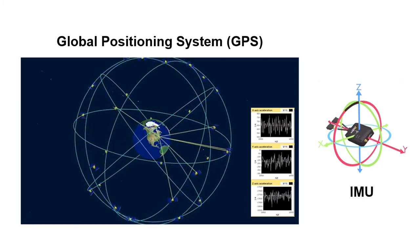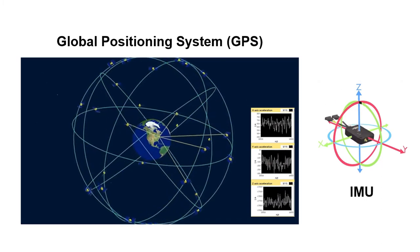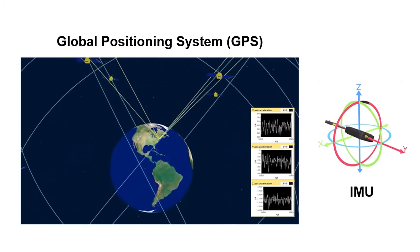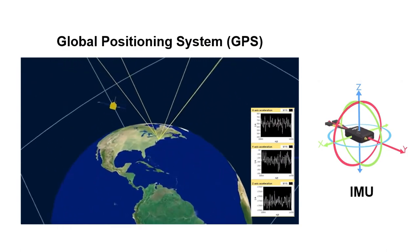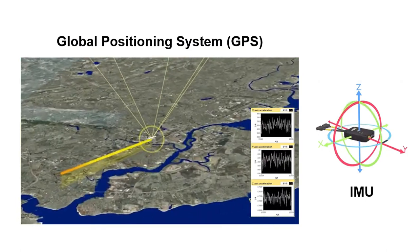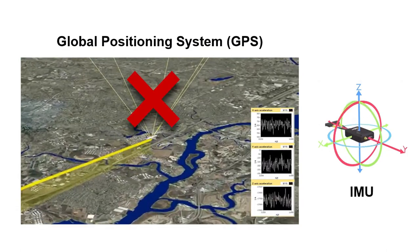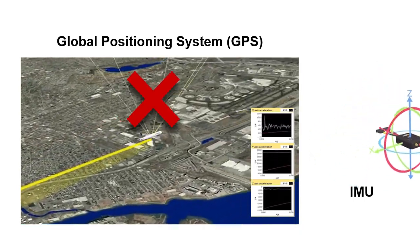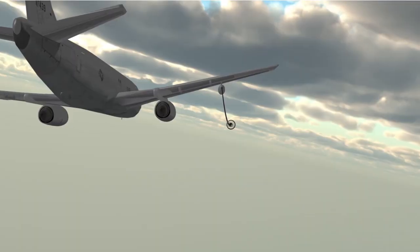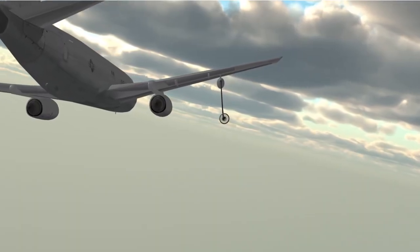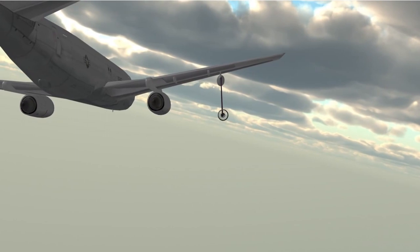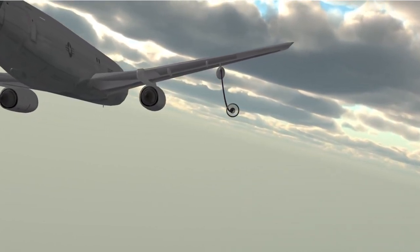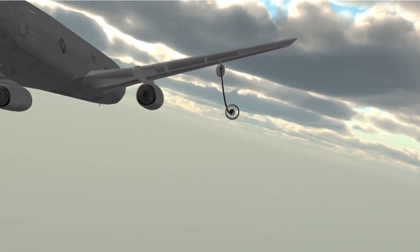A common attempt to automate this process without vision includes the use of differential GPS with IMU data. Unfortunately, satellite signals can be spoofed or jammed, and inertial sensors tend to drift over time. In contrast, computer vision uses imagery, which is impervious to spoofing, jamming, and drift.